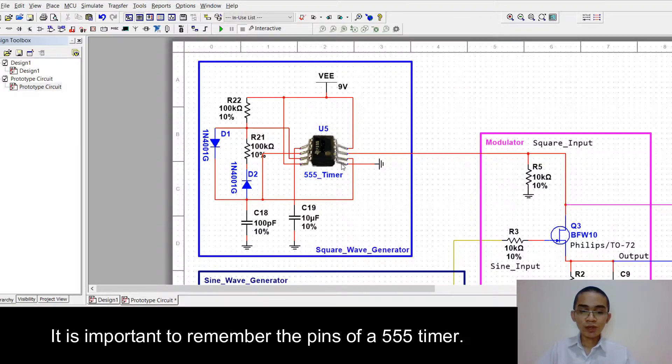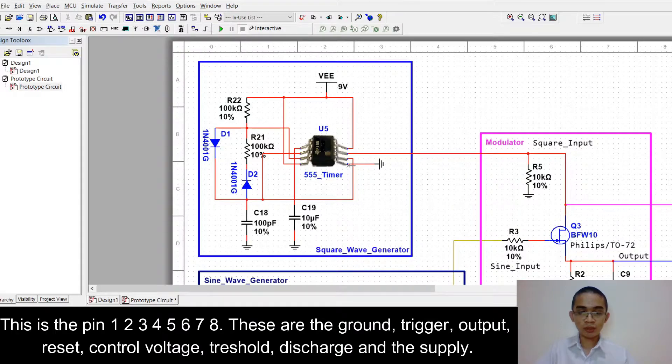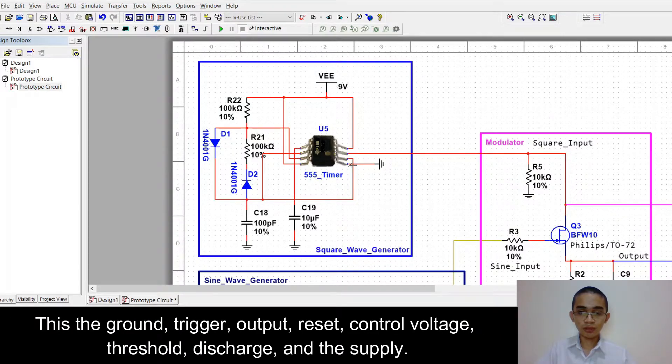It is important to remember the pins of a 555 timer. This is pin 1, pin 2, 3, 4, 5, 6, 7, 8. This is the ground, this is the trigger, this is the output, this is the reset, this is the control voltage, threshold discharge, and the supply.